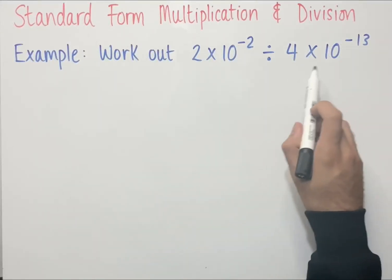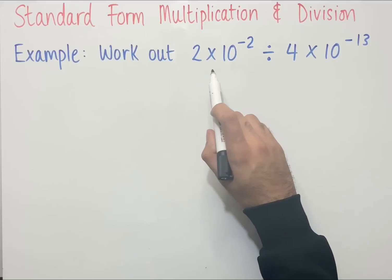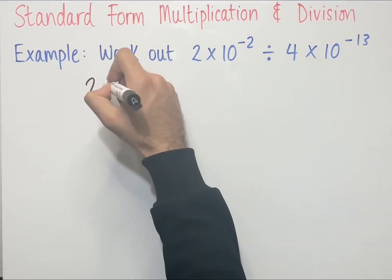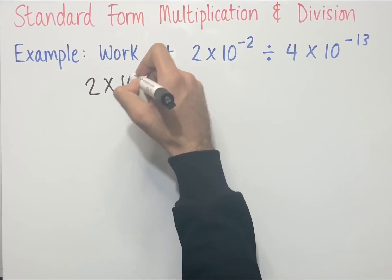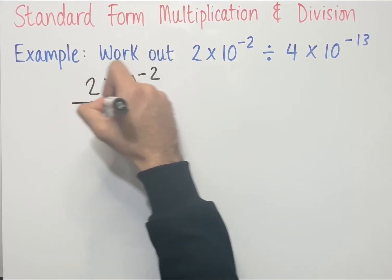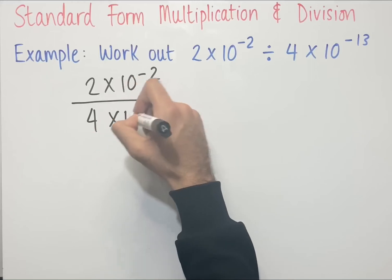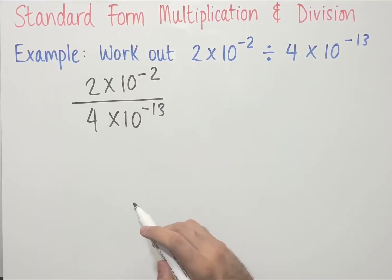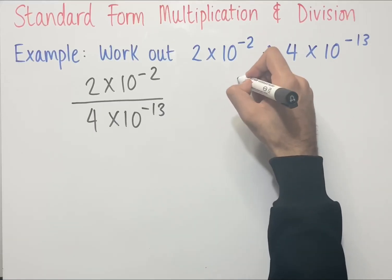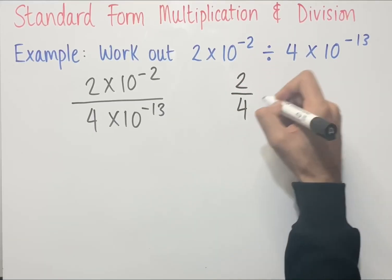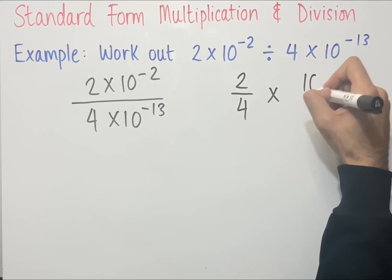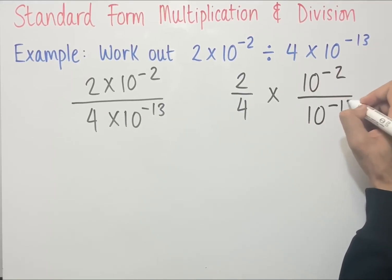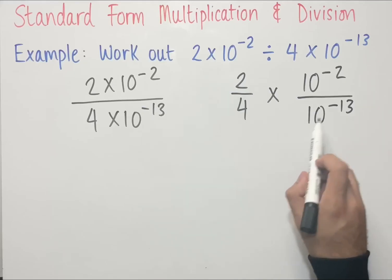For the final example, the first step is to write this as a single fraction. So we can write this as 2 times 10 to the power of minus 2, all over 4 times 10 to the power of minus 13. We then split this into two separate fractions: 2 over 4, times 10 to the power of minus 2 over 10 to the power of minus 13.